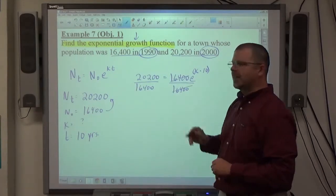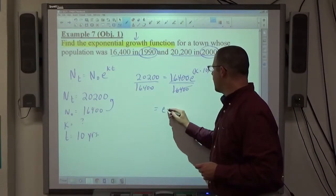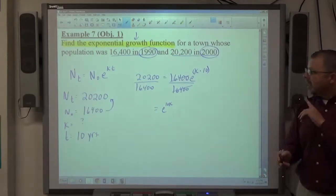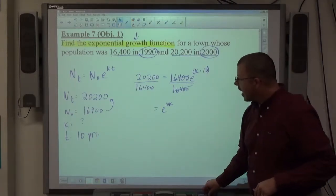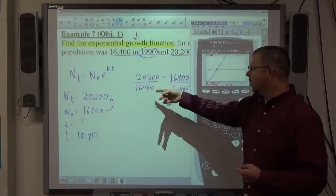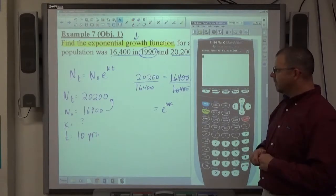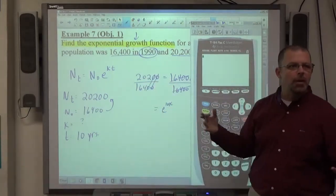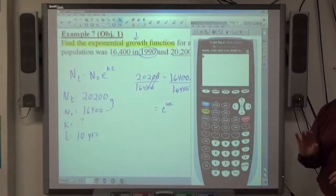I'm going to divide both sides by 16,400. So, that successfully gets rid of that 16,400 coefficient in front of the E. If I unify the right-hand side up a little bit, I get E to the 10K. Now, the left-hand side, we can see, obviously, is a fraction, right? I would rather it stay a fraction than you make it a decimal. And here's what you can do. Obviously, it's 202 over 164. Maybe it can reduce beyond that.